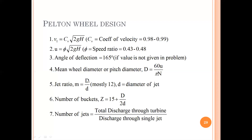Your jet ratio m is defined as capital D divided by small d — your wheel diameter divided by your jet diameter. Mostly it is taken as 12. The number of buckets is given by z = 15 + (D/d) / 2, which is 15 + m/2.